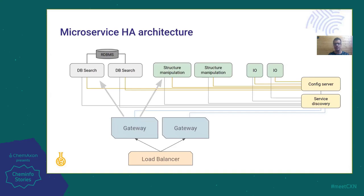In this next slide, I go into a little bit of technical detail about how you can set up a highly available architecture using the microservices. We have the microservice modules — two database search modules, structure manipulation and IO modules in this example. We have two of each module because if any one breaks down, the other can take over the requests. The DB modules here are not stateless, which means we have an underlying relational database engine where these modules are connected, storing the chemical structures used by this microservice. We have a configuration server and discovery server, which provides configuration and service discovery if a new module is fired up.